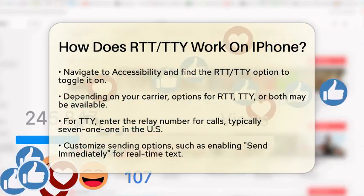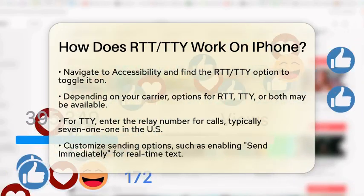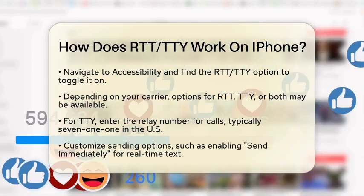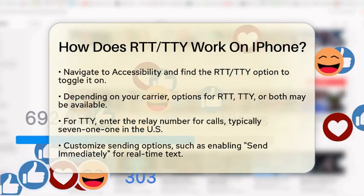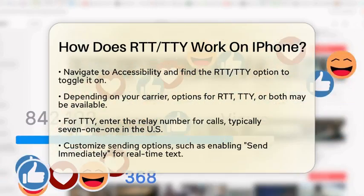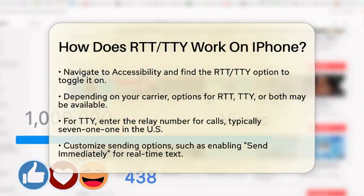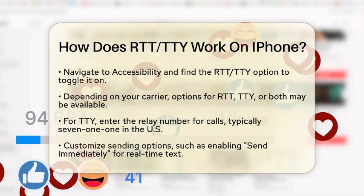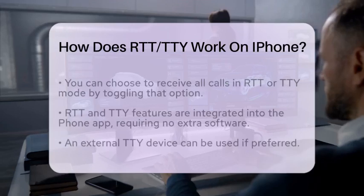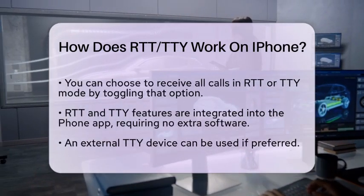If you are using TDY, you will need to enter a relay number for TDY relay calls. In the United States, this number is typically 711. You can also customize your sending options. For instance, you can choose to send characters as you type by enabling the Send Immediately option, or you can type full messages before sending them.